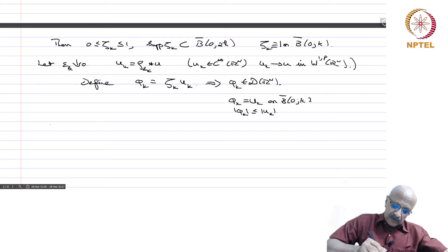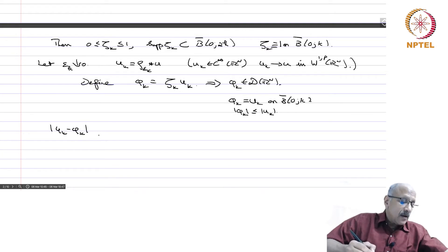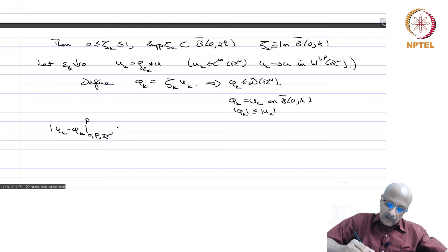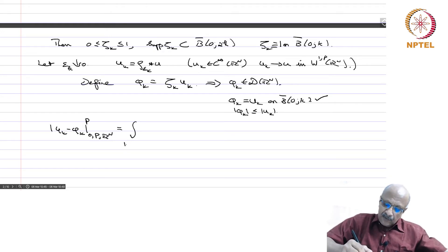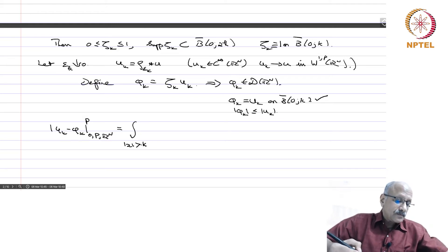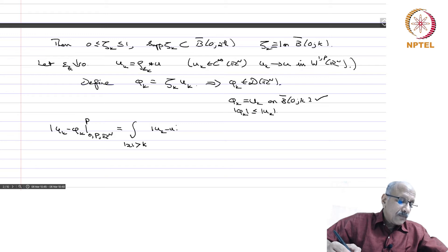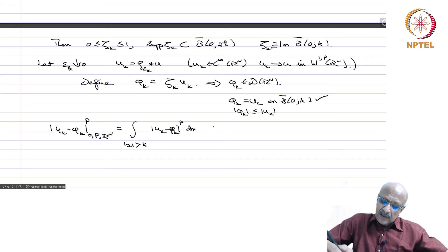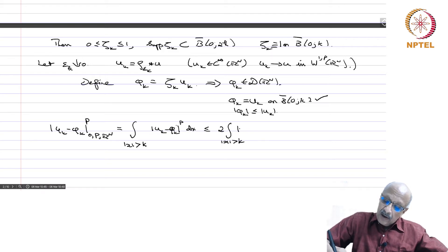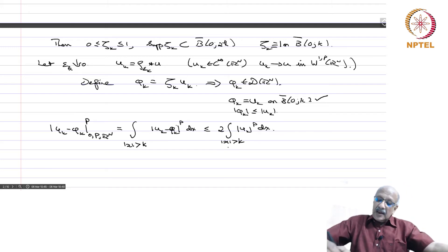Step 2: Let us first look at the L^p convergence. We compute ‖u_k − φ_k‖^p_{L^p(ℝⁿ)} = ∫_{ℝⁿ} |u_k − φ_k|^p dx. Since u_k = φ_k on B(0,k), it is enough to integrate over |x| > k, giving ∫_{|x|>k} |u_k − φ_k|^p dx, which is less than or equal to 2^p ∫_{|x|>k} |u_k|^p dx. I want to show that this goes to 0.